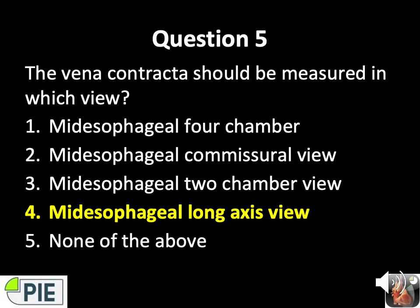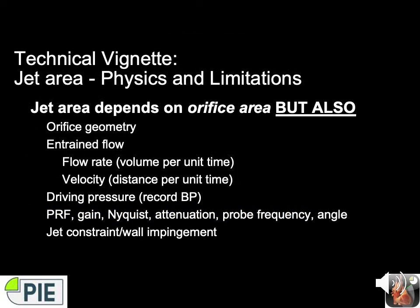The VC should be measured in the mid-esophageal long axis view. A technical summary: jet area depends on orifice area, orifice geometry, train flow, rate of flow, velocity, driving pressure, pulse repetition frequency, gain, and Nyquist limit — making jet area quite unreliable. For example, high left atrial pressures might reduce MR jet size despite severe prolapse.